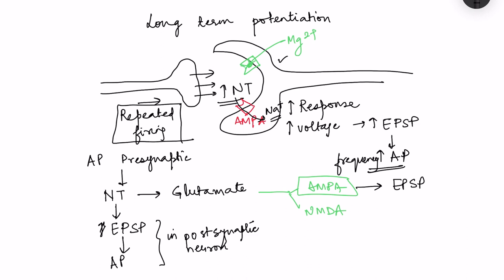With increased release of neurotransmitters, more AMPA receptors open and more sodium ions enter the post-synaptic neuron. Because of this increased EPSP — that is, more voltage change — it will throw off magnesium ions from the NMDA receptor. This block of the NMDA receptor is overcome by means of the voltage change. With magnesium removed, glutamate also binds to NMDA receptors, which then allow entry of calcium ions.